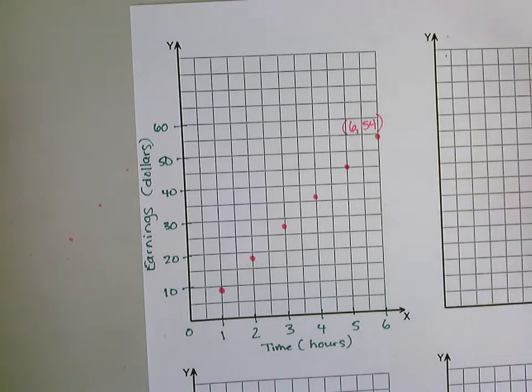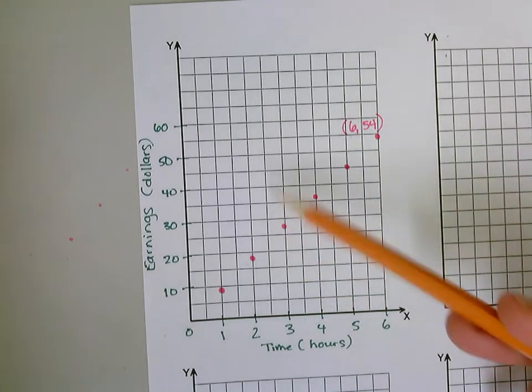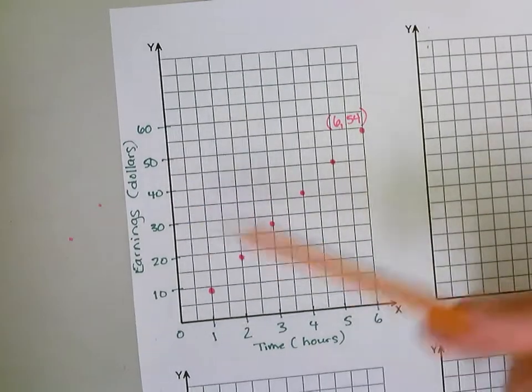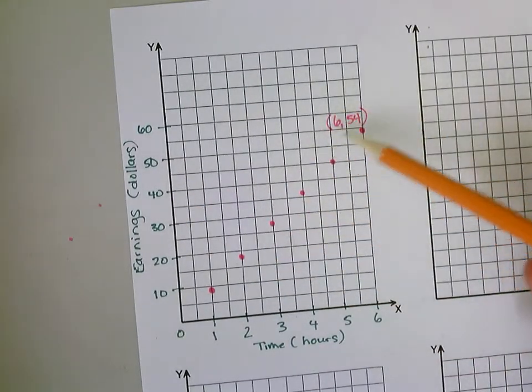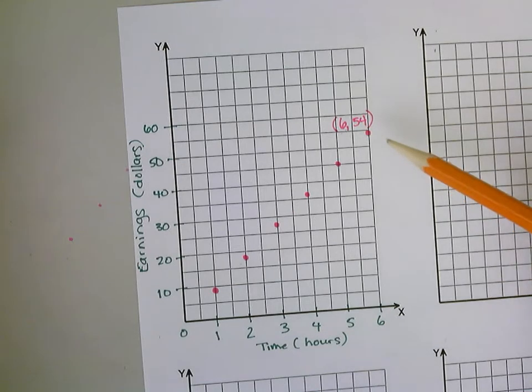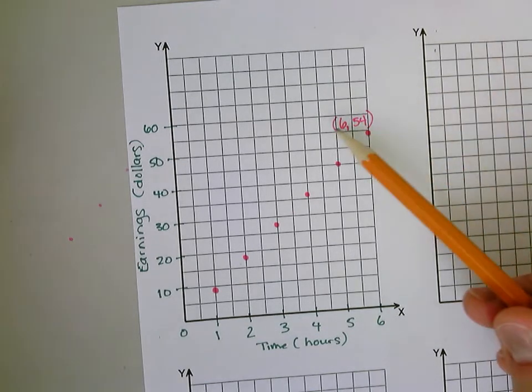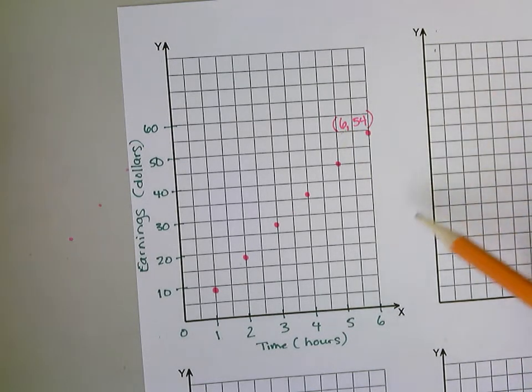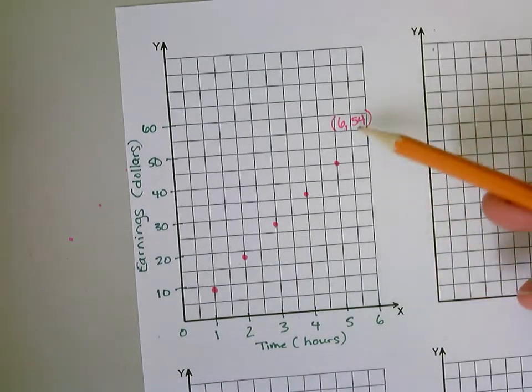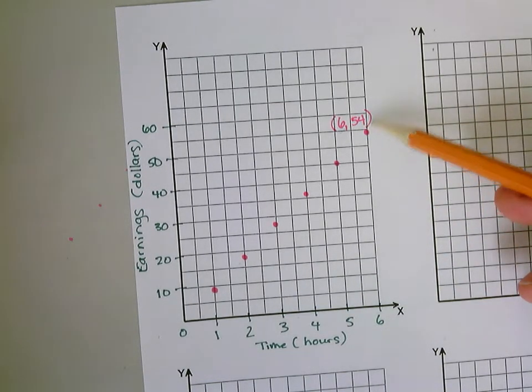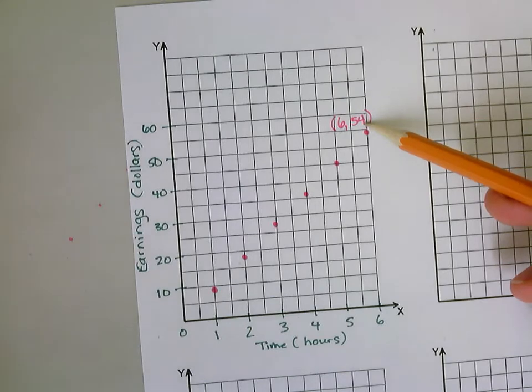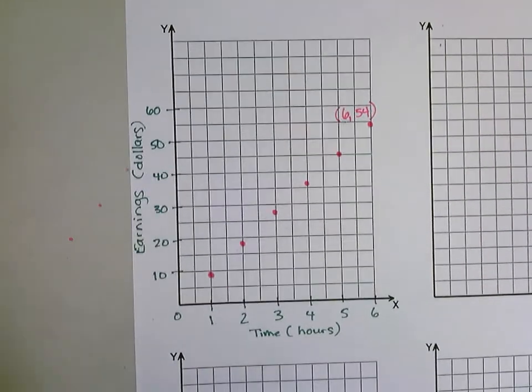Moving forward, the very last one has six hours. My ordered pair—my x-coordinate would go first and then my y-coordinate would go second, just like x comes before y in the alphabet. Six, fifty-four. So how much do you think if after six hours this person made fifty-four dollars, how much do you think this person would have made per hour?